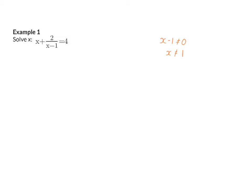Our next step is to get the lowest common multiple. If we look at our question, we have three terms. Our first term is x over 1, and our last term is 4 over 1. So if we now look at our three denominators, it is clear that the lowest common multiple will be x minus 1.